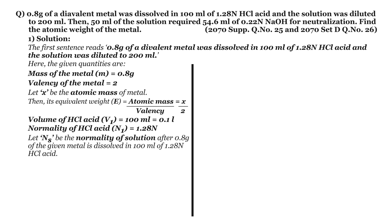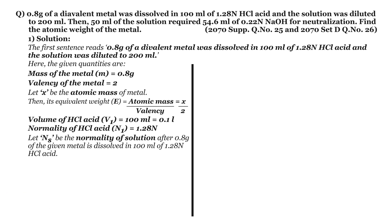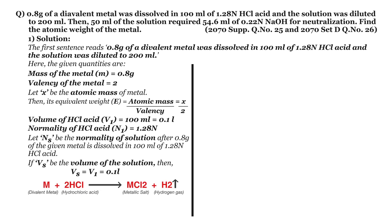Let Ns be the normality of the solution after 0.8 gram of the given metal is dissolved in 100 ml of 1.28 N hydrochloric acid. If we neglect the volume of metal, the volume of the resulting solution equals the volume of hydrochloric acid, so Vs equals V1 equals 0.1 liter. Since the metal decreases the normality of hydrochloric acid by converting a small amount into metallic salt, we can write: number of gram equivalents of hydrochloric acid minus number of gram equivalents of metal equals number of gram equivalents of the solution.